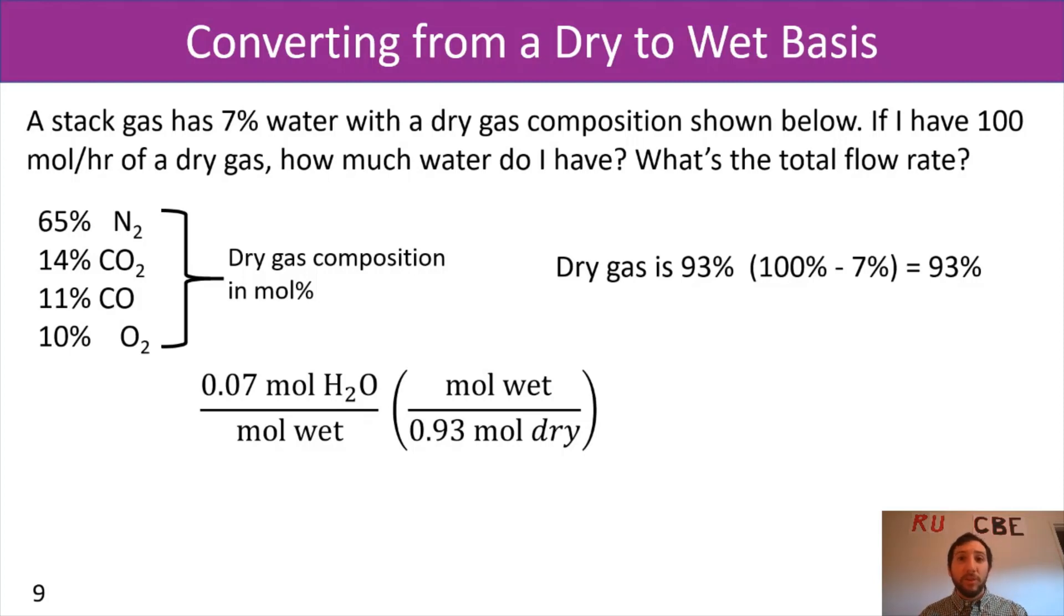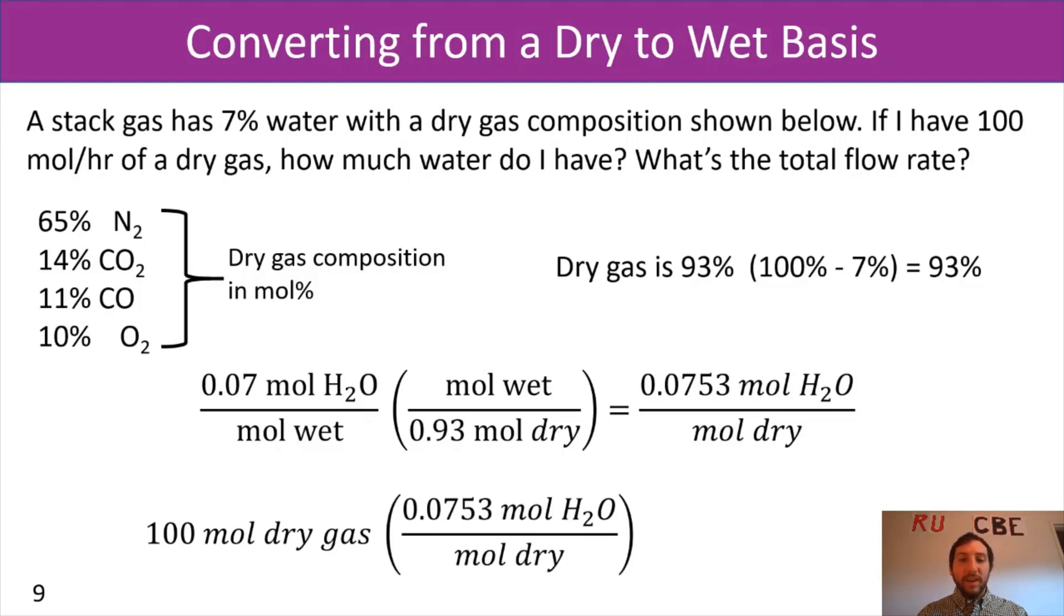So I'm setting up another conversion factor. So we have moles of wet, moles wet in the numerator, moles dry in the denominator. And as you might recognize, the moles wet is always going to be higher than the moles dry, because you always are going to be adding in the water's contribution to your gas. So in this case, when we multiply these out, we're going to get that for every, we have 0.753 moles of water per mole of dry gas. So in this case, if we had 100 moles of dry gas coming into our system, we can use our conversion factor, moles water per moles dry. And in that case, we're going to figure out that for that 100 moles dry gas coming into the system, we had 7.53 moles of water coming in.